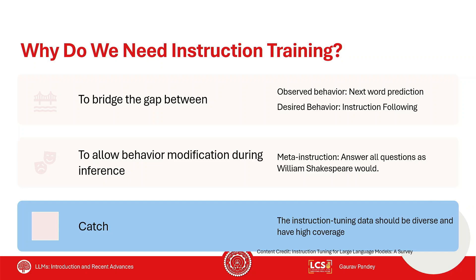The second thing people want is that the model has some meta behavior — you want it to follow some meta instruction. For example, you want it to be helpful, or sometimes you want it to behave differently, like generating verbose outputs or small outputs. Whatever meta behaviors you want from your model, you can enforce them during the instruction tuning phase.